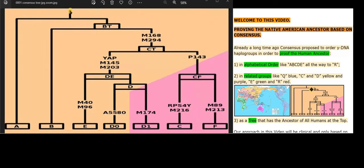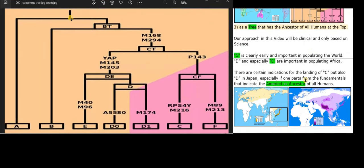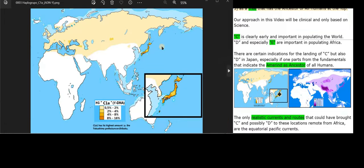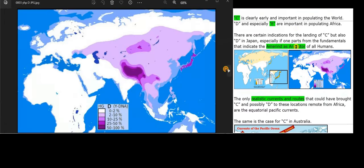Our approach in this video will be clinical and only based on science. C is clearly early and important in populating the world. D and especially E are important in populating Africa. There are certain indications for the landing of C but also D in Japan, especially if one parts from the fundamentals that indicate the Amerind as ancestor of all humans.